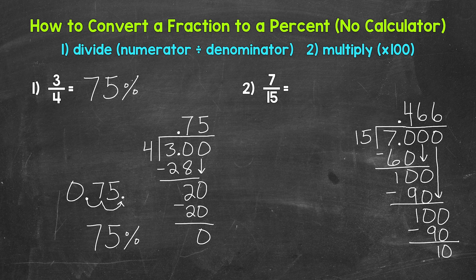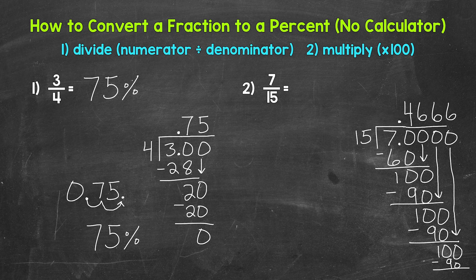This is going to give us a repeating decimal — it's never going to end. We can add as many zeros as we'd like and bring them down and we're not going to get to that clean cut zero. We end up with 100 again, so those sixes are going to continue forever. So I'm going to write the decimal off to the side: 0.46666 — these continue on. We have a repeating decimal.